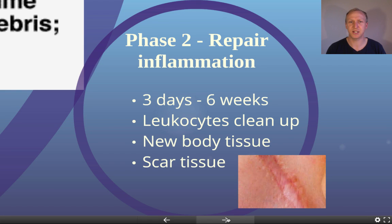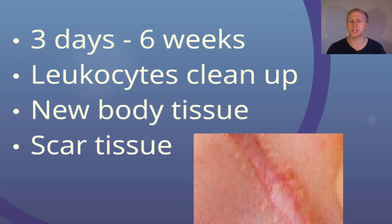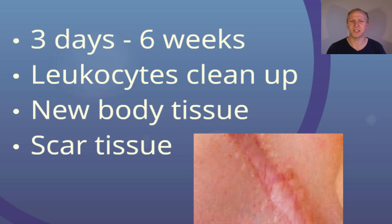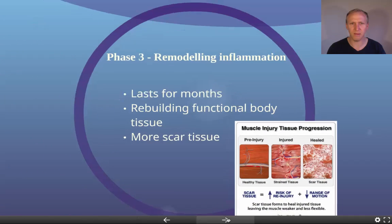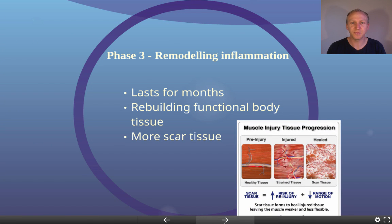Phase two is the repair inflammation stage, which can last from three days to six weeks depending on the severity of the injury. During this stage, leukocytes clean up leftover debris and half-pieces of body cells. Your body starts producing new tissue — new skin cells if skin was cut, new ligament cells if a ligament was torn. However, it also produces a lot of scar tissue, which forms faster but is weaker and less functional. More scar tissue means a greater likelihood of re-injury, so rehabilitation during this phase — such as stretching, low-impact movements, or massage — helps reduce scar tissue formation.